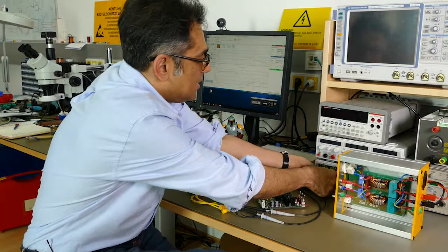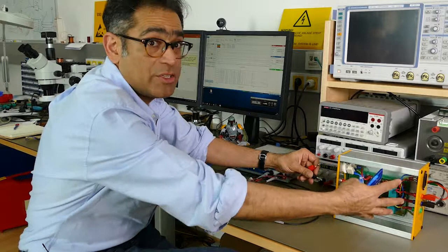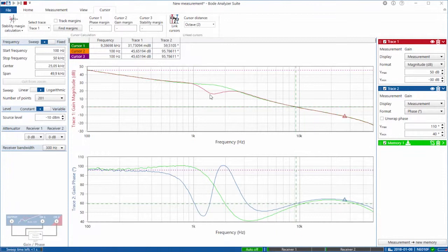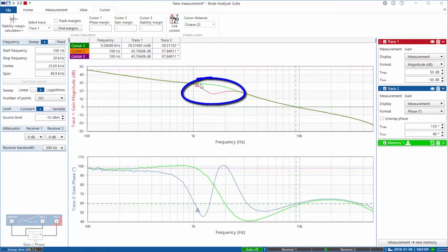So now on this red trace, this is the resonant frequency of the LC inside of the LISN, you can see that the loop, the gain has dipped. But look at what's happening with the phase, the phase is going wildly up and down.